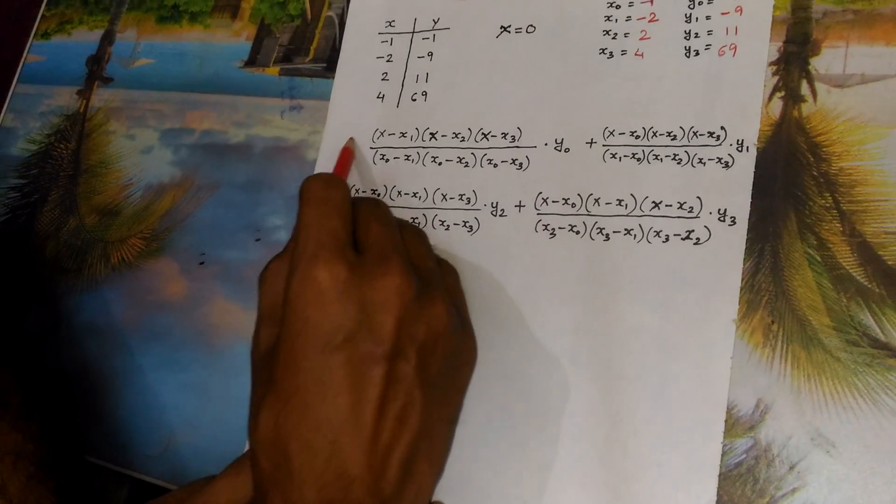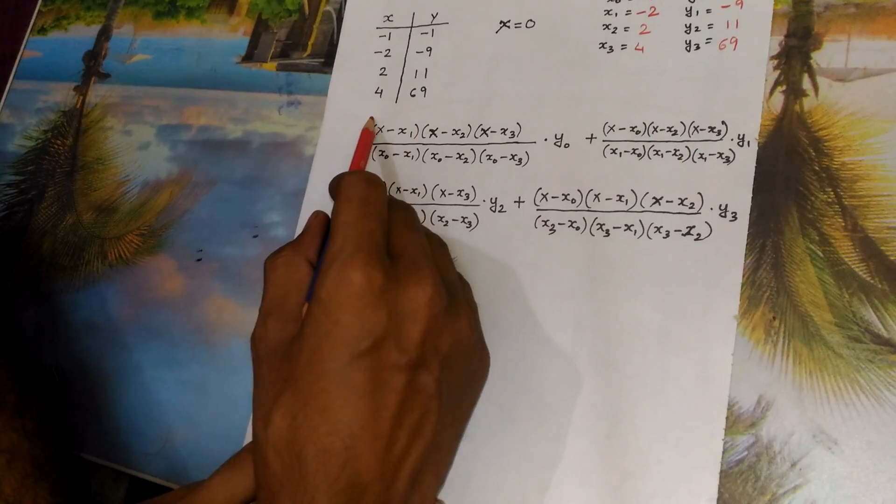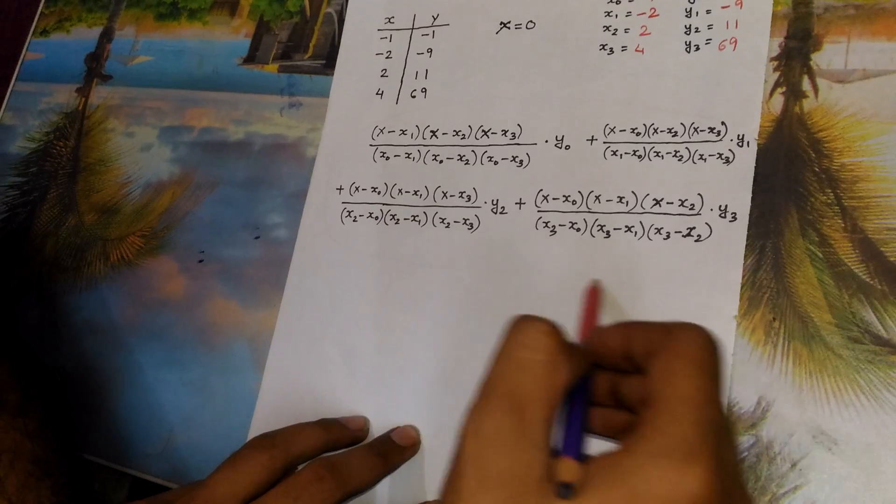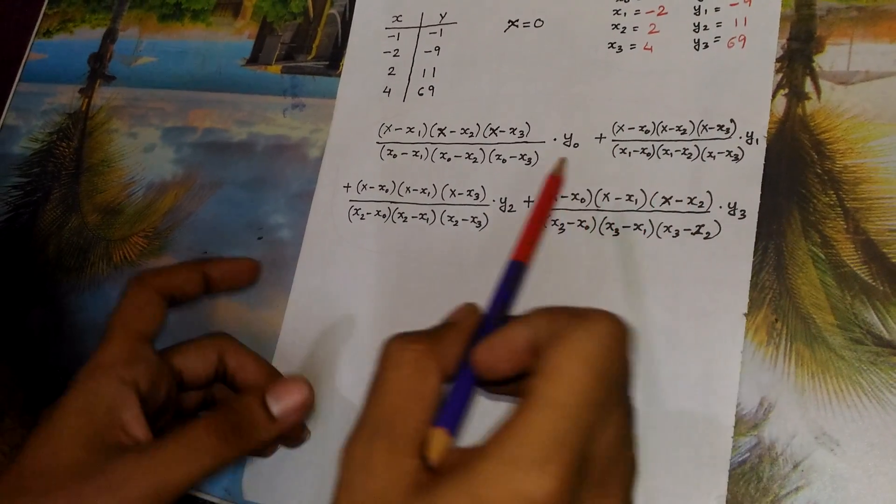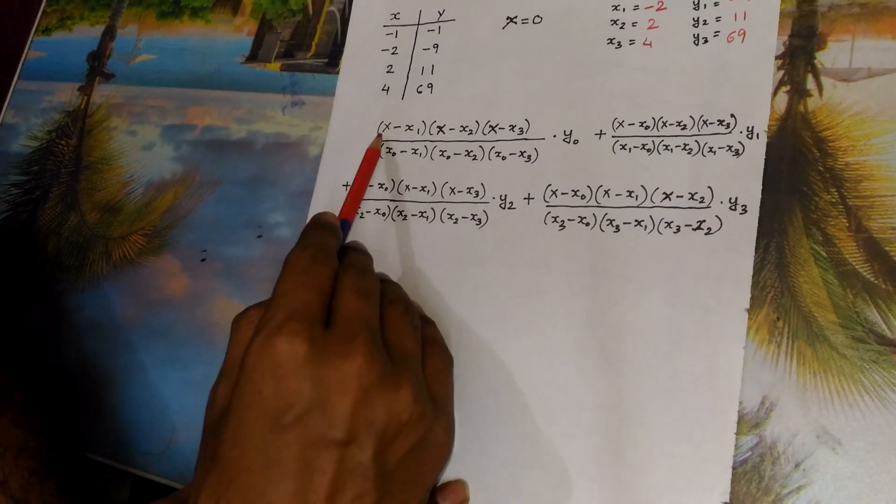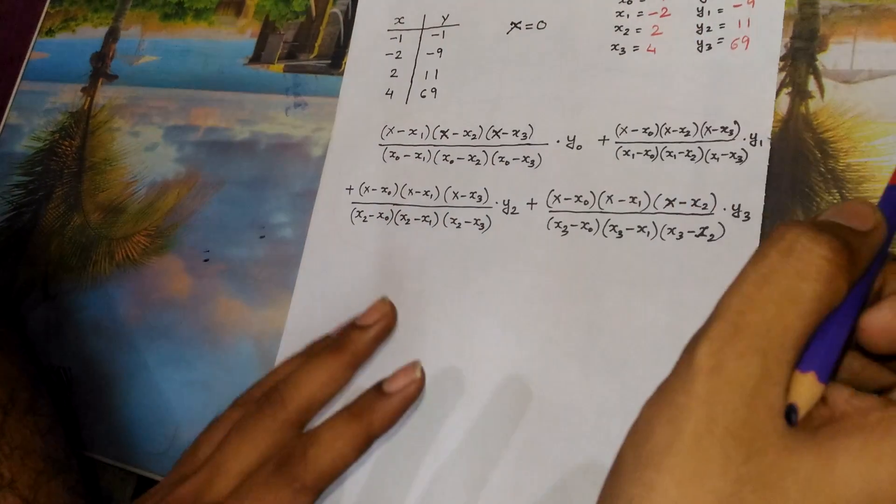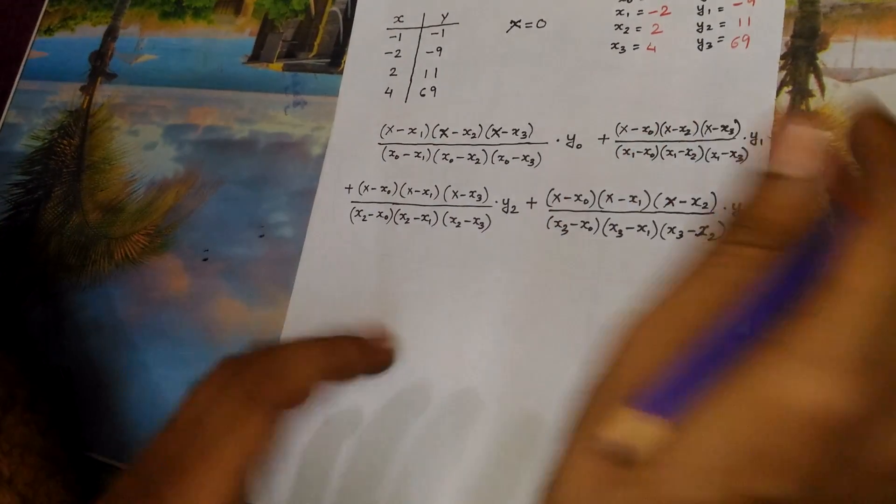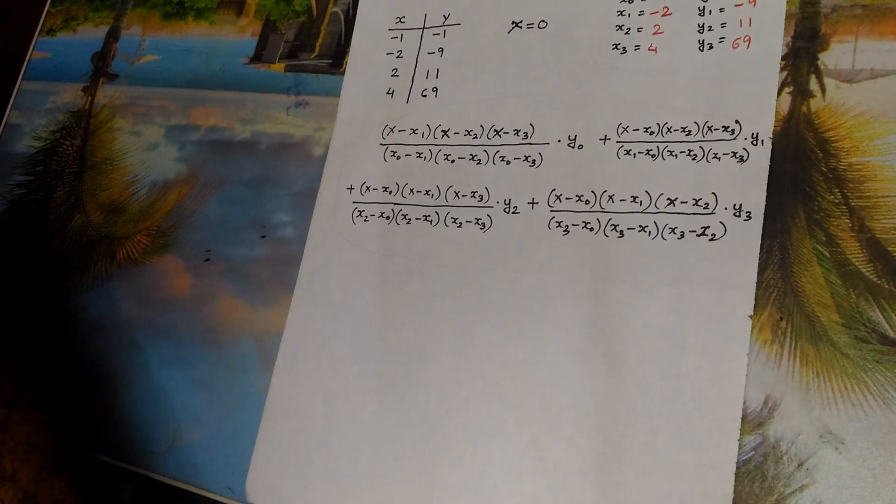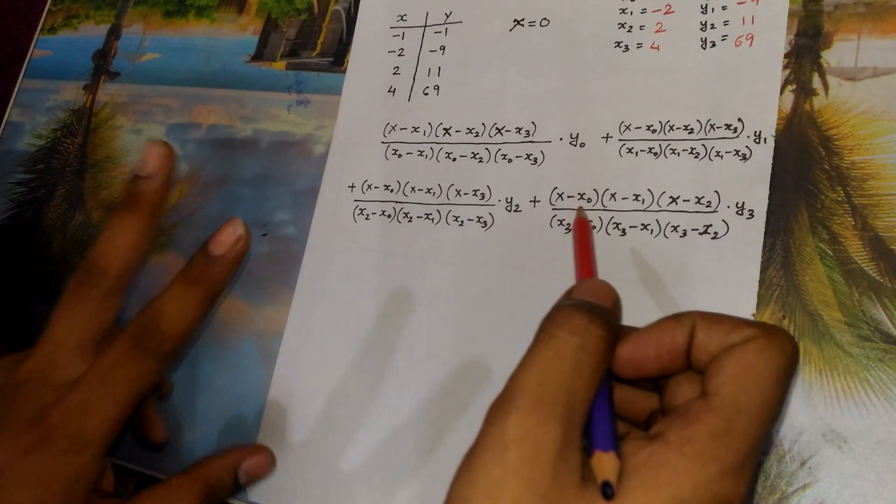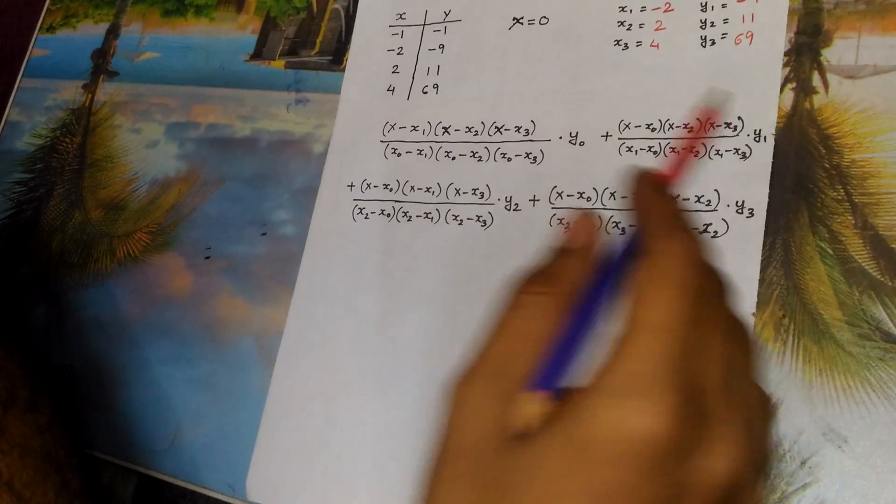Now this is the Lagrange's interpolation formula. The formula goes like this: x minus x1. Here the value of x may be given or may not be given. That depends completely on the question.